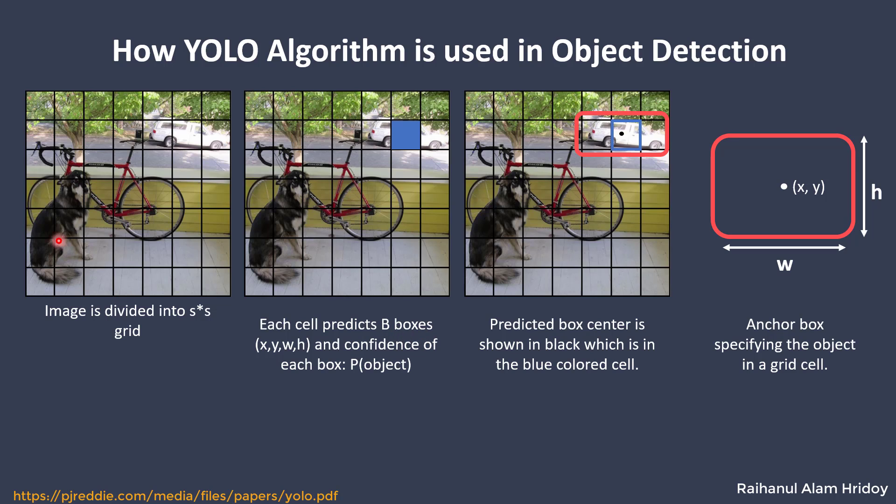We take an image and split it into S by S grid. Each cell predicts B boxes that have parameters x, y, which specifies the center of the object, and w, h, that denotes the width and height of the box relative to cell width and height. Each cell will specify only one object. Suppose this blue cell detects this car. The box will look like this. So each cell can make a box corresponding to the objects.